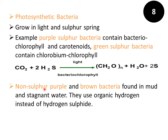There are a few more examples, such as non-sulphur purple and brown bacteria, which are found in mud and stagnant water. They use organic hydrogen instead of hydrogen sulfide. So in the case of purple sulfur bacteria and green sulfur bacteria, carbon dioxide combined with hydrogen sulfide, but in the case of non-sulphur purple and brown bacteria, carbon dioxide combines with only organic hydrogen.